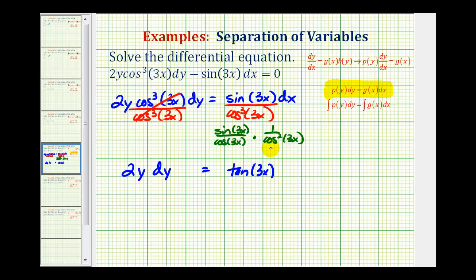And since 1 over cosine theta is equal to secant theta, this would just be secant squared 3x, and of course we have our dx.